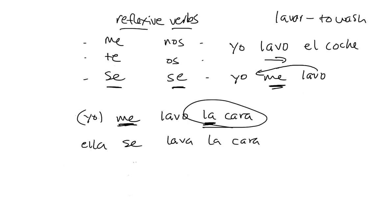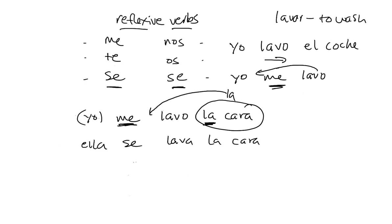Now la cara here is a direct object, so it could be replaced with a direct object pronoun. The direct object pronoun for la cara is la. As I said before when talking about order and placement of pronouns, the direct object pronoun always comes second. So if you simply want to say 'I wash it,' referring to my face, you have to say 'I, to myself, wash it' — so la comes second: yo me la lavo. And then cara vanishes. Me la lavo. Ella se la lava.